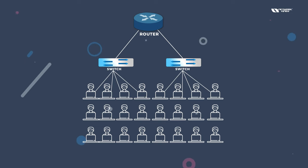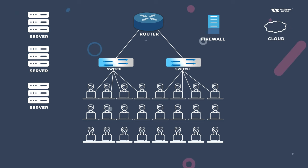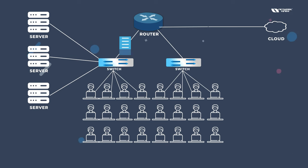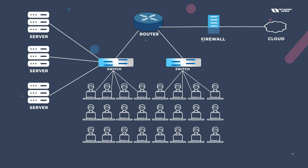Companies still need routers for internet access. When a company has servers, they need firewalls for security. The typical design is: internet connection comes in, goes through the firewall, then to the router, and servers connect through switches. This is the network design you learn in CCNA, CCNP, and firewall courses. It is not possible that all companies eliminate on-premise networking.